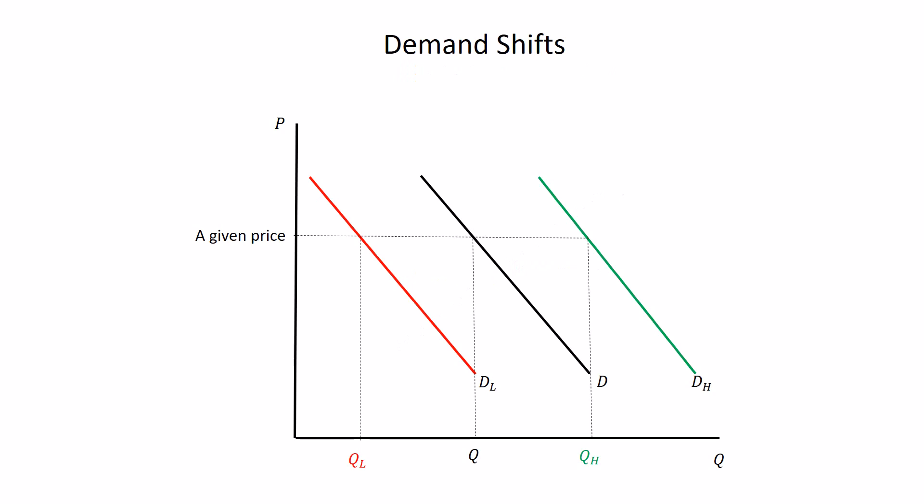The reason we emphasize this is because that will push you to higher quantities at every price for the increase or lower quantities at every price for the decrease. I can pick some given price level and at that price level, the lowest curve has the lowest quantity. The next curve has the higher quantity and the next curve has the highest quantity. And that's what's going on when we talk about shifting left or right.